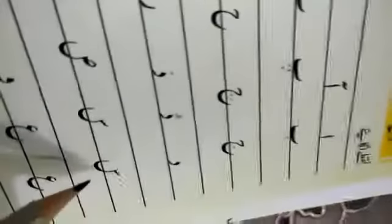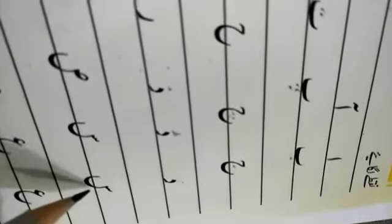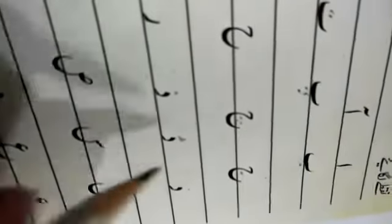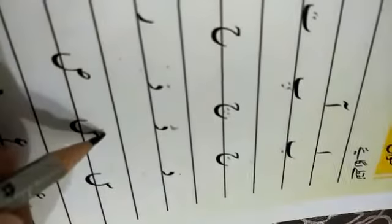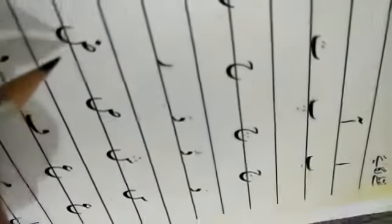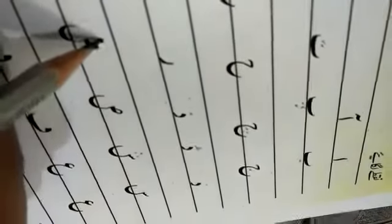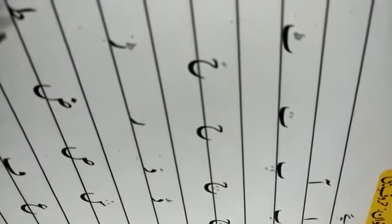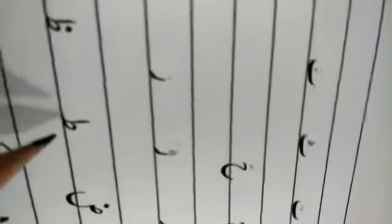What comes after zhe? There will be seen, no dot. And what comes after seen? Sheen, three dots on sheen. What comes after sheen? Swad, no dot. What comes after swad? There will be one dot. And what comes after zwad? No dot. Zoing, one dot.